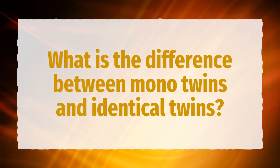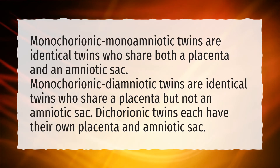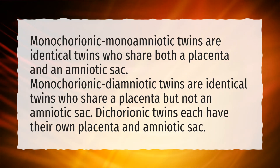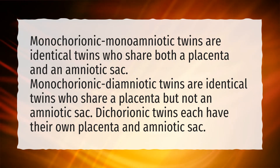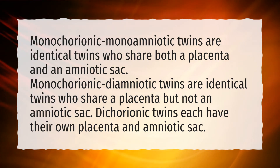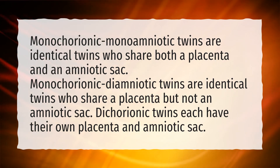What is the difference between mono twins and identical twins? Monochorionic monoamniotic twins are identical twins who share both a placenta and an amniotic sac. Monochorionic diamniotic twins are identical twins who share a placenta but not an amniotic sac. Dichorionic twins each have their own placenta and amniotic sac.